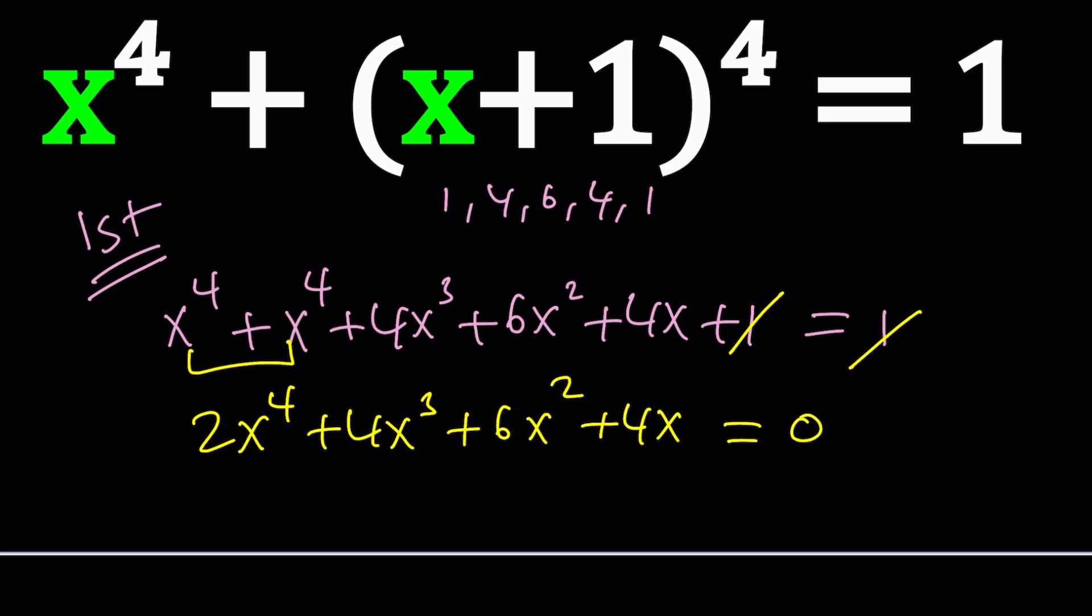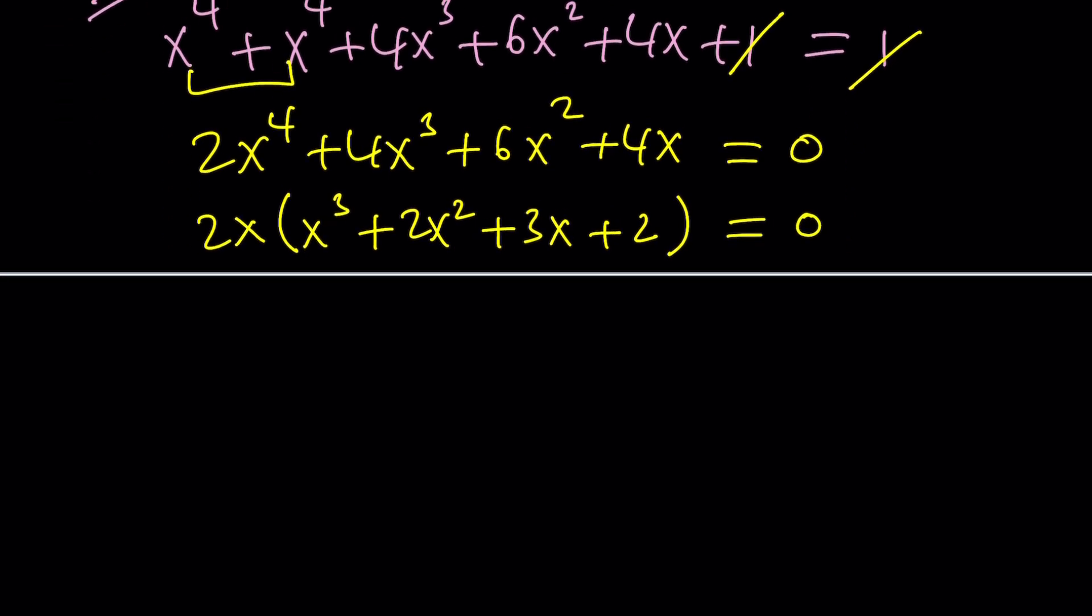Great. Now, our quartic equation is actually going to turn into a cubic equation. You know why? Because we can factor out x. We can even factor out two x, but that's not going to make a difference in terms of finding the solution. So let's go ahead and factor out two x. That gives us x cubed plus two x squared plus three x plus two, and that's equal to zero. First of all, from here, we immediately get that x is equal to zero.